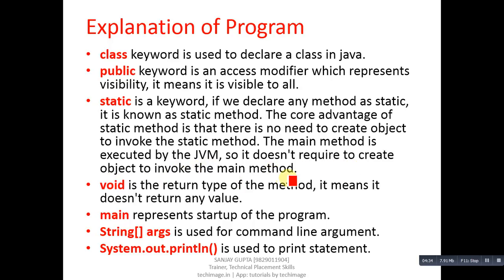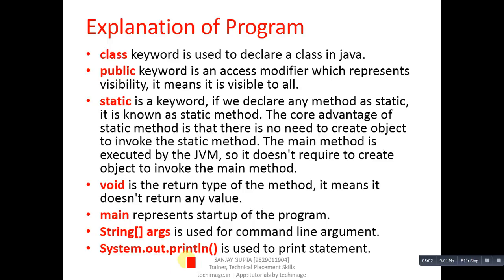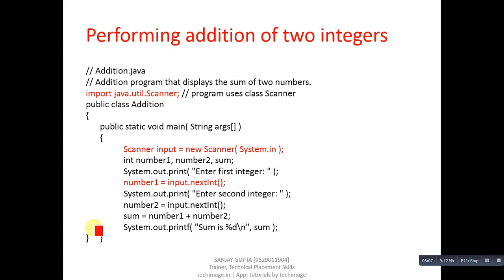'void' is the return type of the method, meaning it doesn't return any value. 'main' represents the startup of the program — execution of every Java program begins with main. 'String args[]' is used for command line arguments, which will be explained in later tutorials. System.out.println is used to print a statement.